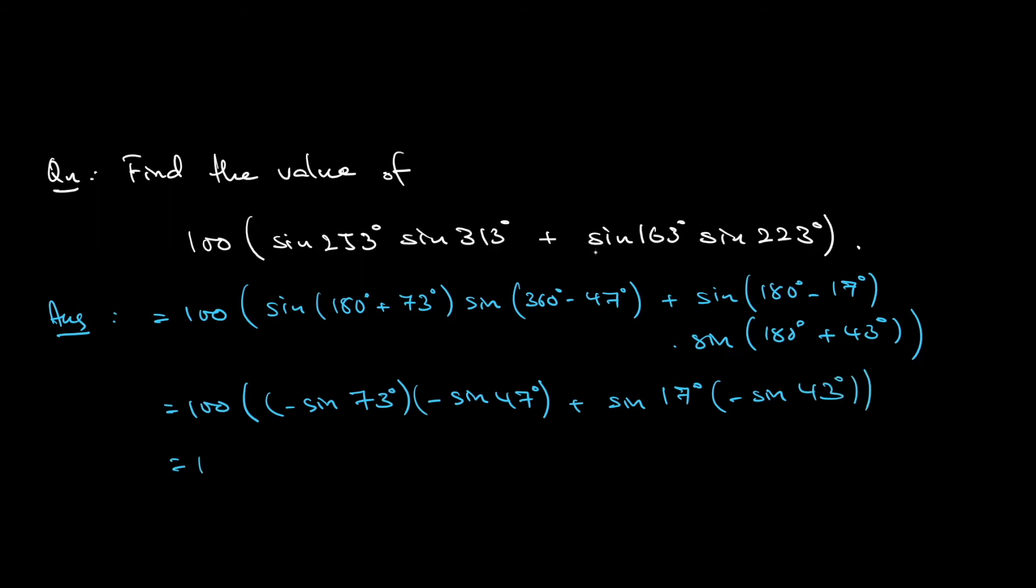Let's simplify this first. Negative multiplied by negative will be positive, so sine 73 degrees sine 47 degrees minus sine 17 degrees sine 47 degrees.